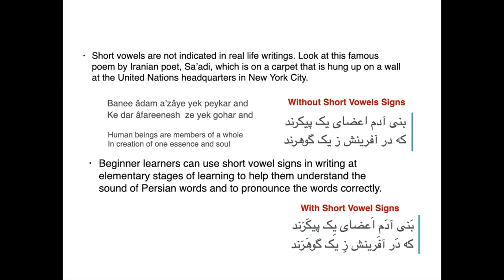Beginner learners can use short vowel signs in writing at elementary stages of learning to help them understand the sound of Persian words and to pronounce the words correctly. Here is the same poem with short vowel signs.